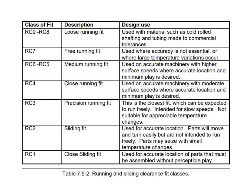For running and sliding clearance fits, the classes are RC1 through RC9: close sliding fits, sliding fits, precision running fits, close running fits, medium running fits, free running fits, and loose running fits. For example, loose running fits are used with materials such as cold-rolled shafting, tubing, and commercial tolerances. Close sliding fits are used for accurate location of parts that must be assembled without perceptible play.